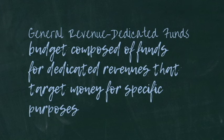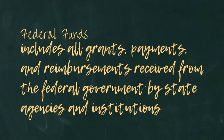The general revenue dedicated funds is a subset of the general revenue fund, composed of over 200 funds for dedicated revenues that target money for specific purposes. The legislature can appropriate money from these accounts only for the dedicated purposes. The balances in this budget are used to certify that the constitutional pay-as-you-go limits are being met. Funds amounted to $6.3 billion for 2018–2019. Federal funds include all grants, payments, and reimbursements received from the federal government by state agencies and institutions such as Medicaid — amounting to $72 billion for 2018–2019.